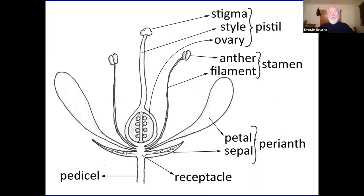Typically, a plant flower has four parts, four whorls of bracts — remember, highly transformed leaves. The lower whorl of a plant is formed by bracts that really look pretty much like a leaf: they are green, photosynthetic, and they normally have a central vein, a midrib vein, and they look pretty much like a leaf.